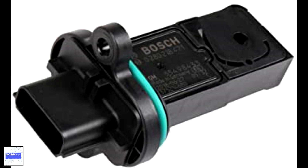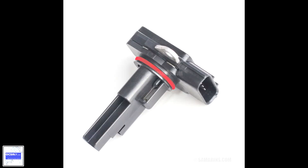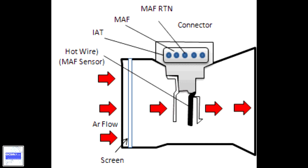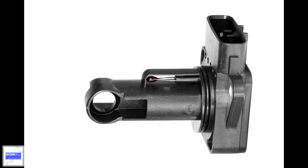In modern cars, the only way to test the mass air flow sensor is with a scan tool. Mechanics measure the amount of air flow, or mass air flow sensor readings, at different RPMs, then compare the readings to the specifications or to the readings of a known good mass air flow sensor.